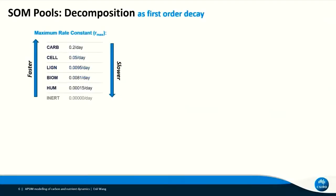Once the SOM pools are established, EPSIM simulates their decomposition as first-order decay using rate constants. Each SOM pool has a maximum rate constant, as listed in this table, with the quickest pool on the top and slowest pool at the bottom. The inert pool is also listed there but with a rate constant of zero.